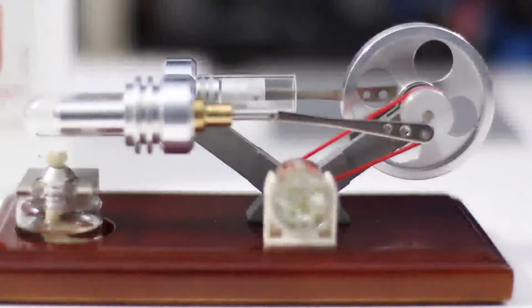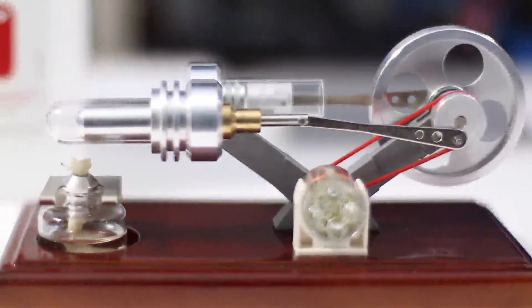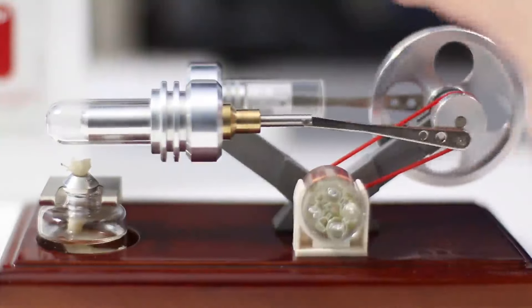And what's great about this Sunitech Sterling engine is that they use clear components so you can see inside. In this case, you'll be able to see the piston as it moves through the cycles over here.